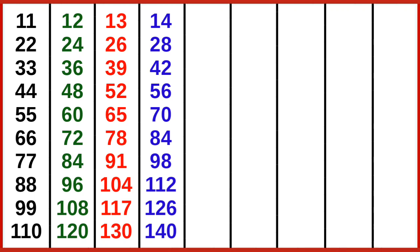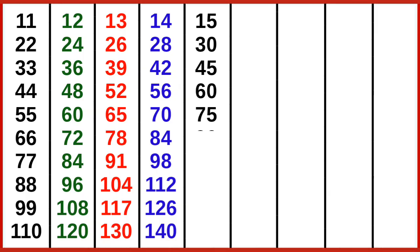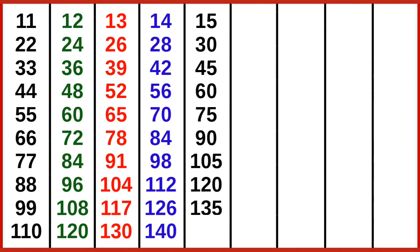15 ones are 15, 15 twos are 30, 15 threes are 45, 15 fours are 60, 15 fives are 75, 15 sixes are 90, 15 sevens are 105, 15 eights are 120, 15 nines are 135, 15 tens are 150.